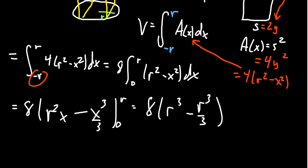Factor out the r³, you're going to get 8r³ times (1 - 1/3). One minus a third, of course, is 2/3. And so we see that the volume is going to be 16/3 r³.